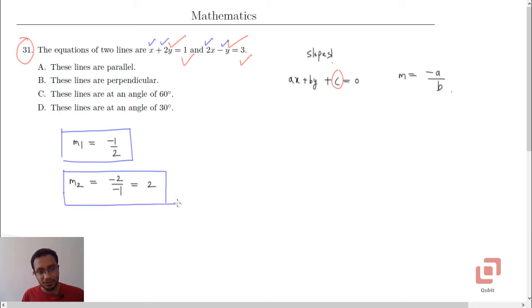Now, we also know the shortcut that if two lines are perpendicular to each other, then product of their slopes is minus 1. And that is the case here. So, M1 is negative 1 upon 2, M2 is 2, and if you take the product of their slopes, then you are getting minus 1. What does it mean? It means that the first line is perpendicular to the second line. So, the option is B.